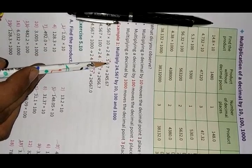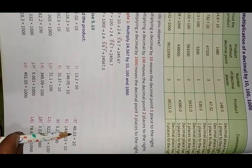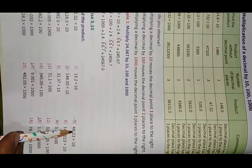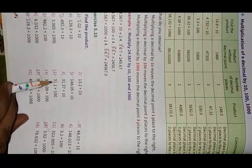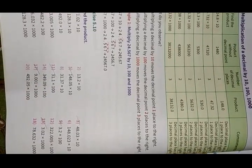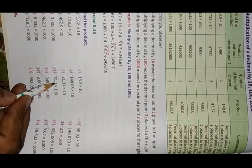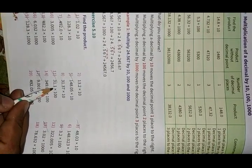Similarly, 48.03 into 10 gives 480.3 — just shift the decimal one place to the right. When you multiply by 100, you shift the decimal two places to the right. For example, 31.1 into 100: there is only one digit after the decimal, so we add an extra zero to make up the second place.